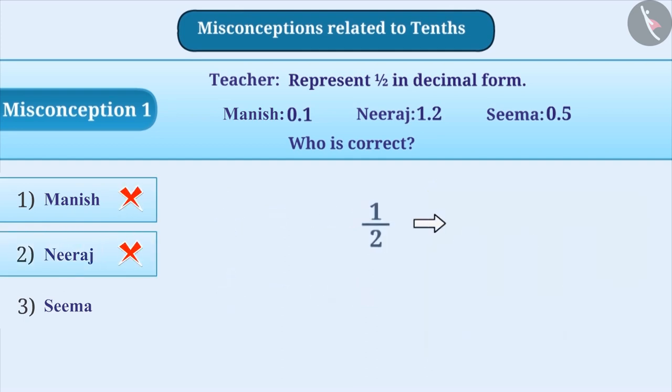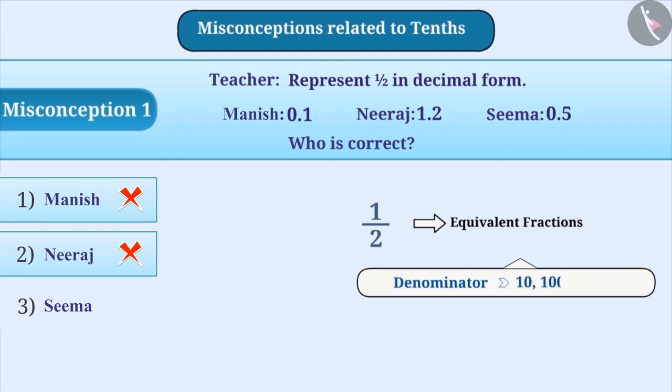The correct understanding is that we need to find the equivalent fractions of 1 by 2 whose denominator is any of the numbers like 10, 100, 1000, etc. Multiplying the numerator 1 and the denominator 2 of 1 by 2 by 5 gives the equivalent fraction 5 by 10.